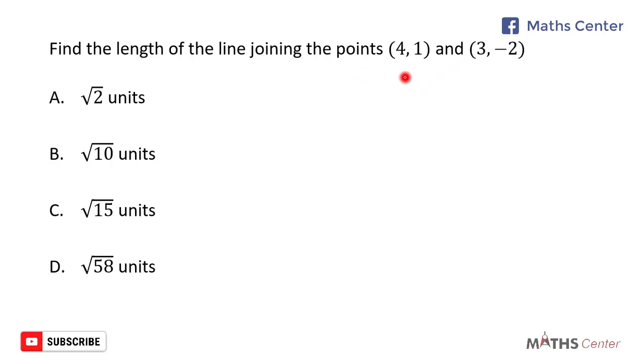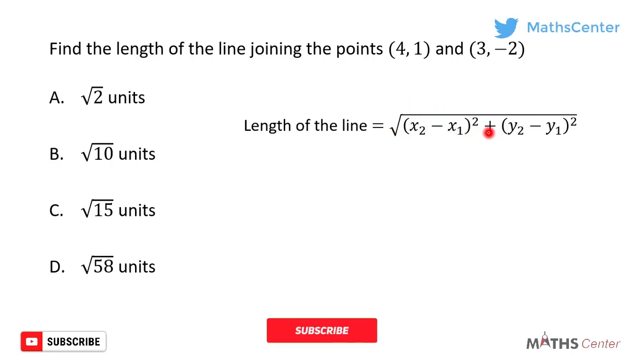To get the length of the line joining these two points, we are going to use the formula: length of the line equals square root of (x2 - x1)² plus (y2 - y1)². I'm going to choose the first point as my x1, y1 and the second point as my x2, y2.